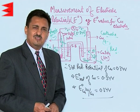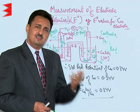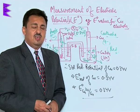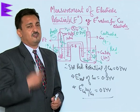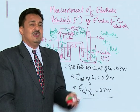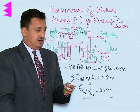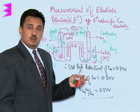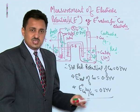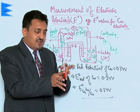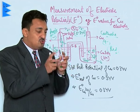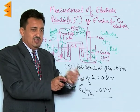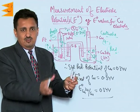E0 oxidation applies to those species which are more reactive than hydrogen in terms of losing electrons, and E0 reduction applies to those species which are less reactive in terms of losing electrons. In this way we get two types of values: E0 oxidation and E0 reduction.